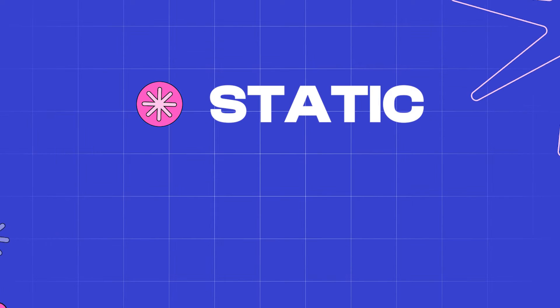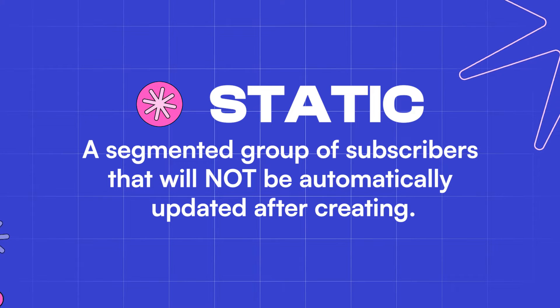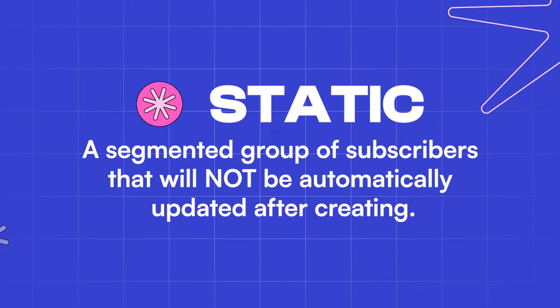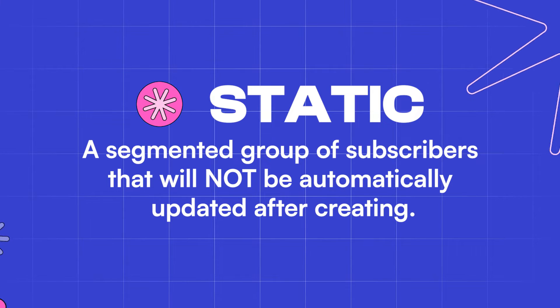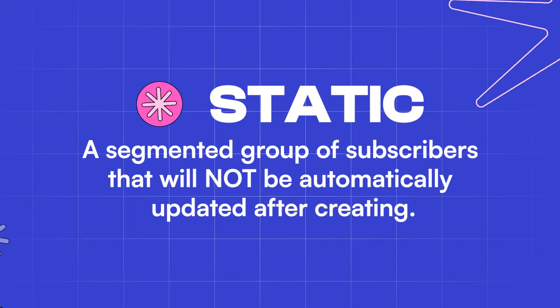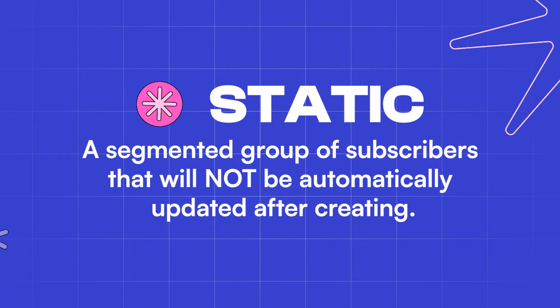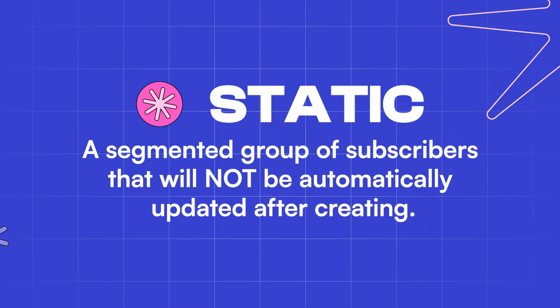Selecting static creates a segmented group of subscribers based on specific conditions, but this segment will not automatically update after you create it. This means if new subscribers fit the segment conditions or requirements after you create the segment, they won't be added to this segment.